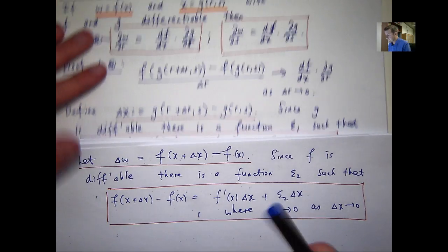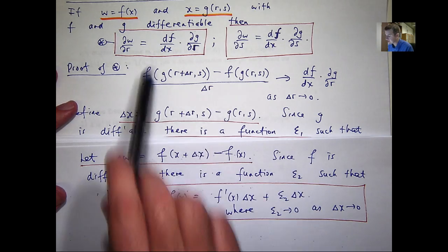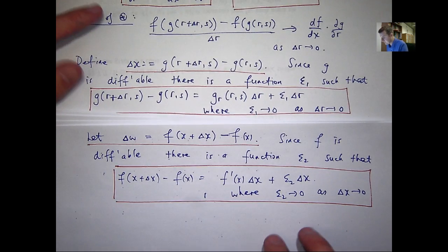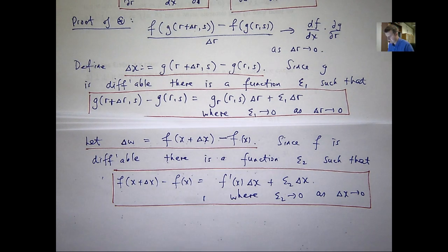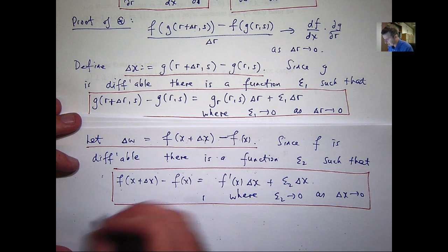So, what can we do with this? Well, essentially, we want to somehow work with this and show that the limit as delta r goes to 0 is this product. Well, let's consider this delta w.